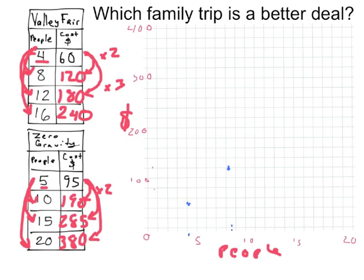12 people come up to 12 right here. And go up to 180, which should be just a little less than 200. And 16 people go up to 240, should be a little less than 250. And that's making a line for the price of Valleyfair.